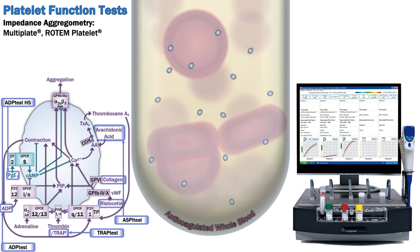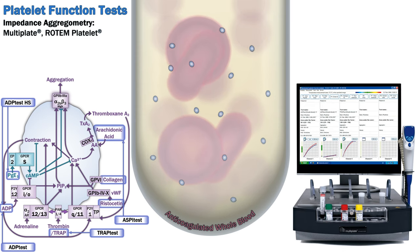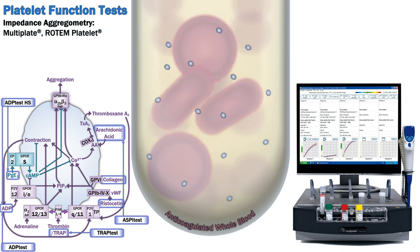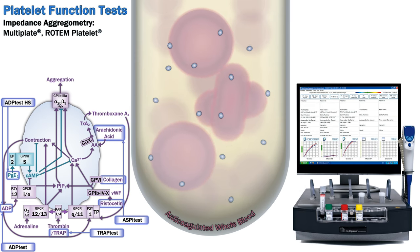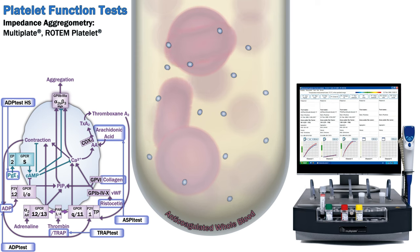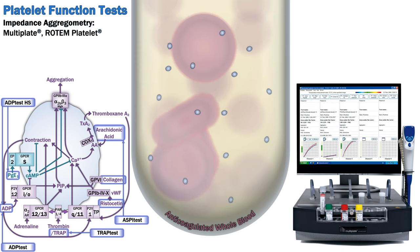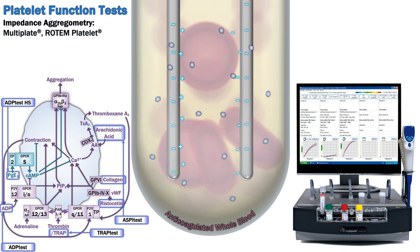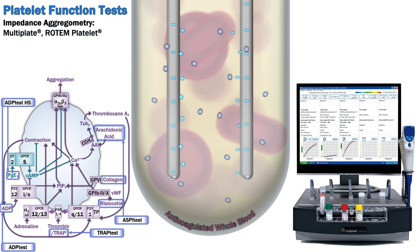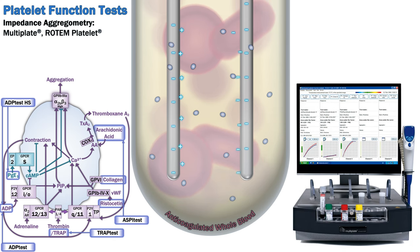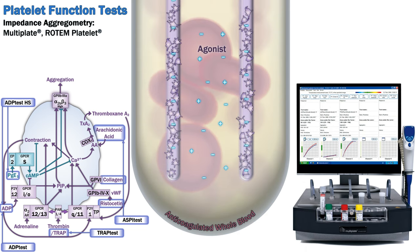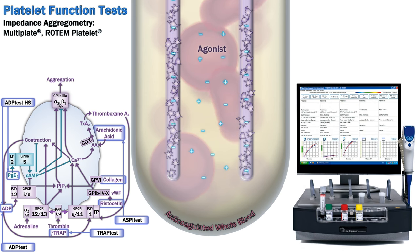Impedance aggregometry is another way to bypass the optical problem with anticoagulated whole blood. It's used in the Multiplate device as well as the platelet function tests packaged with ROTEM. The capabilities of the Multiplate device are significantly closer to the gold standard LTA than VerifyNow — it can use a large variety of agonists and provides continuous output. A pair of electrode wires are placed in the sample and an alternating current is passed through, measuring the impedance over time. When an agonist is added the platelets are stimulated and aggregate on the electrodes, increasing the impedance, which is detected and plotted.